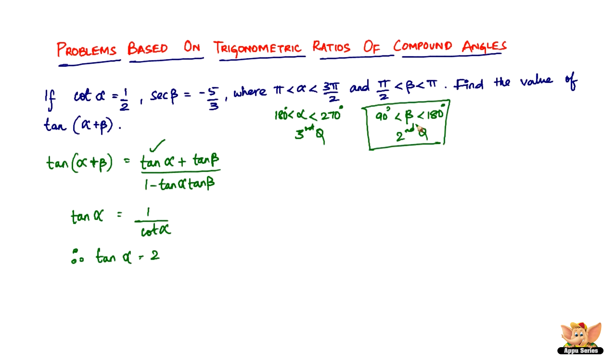β lies in the second quadrant where sin is positive, not tan. So tan is going to be negative there. So how are we going to find that? We have sec. There is an identity which involves tan and sec.